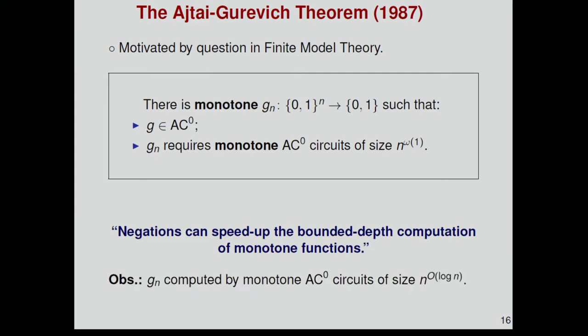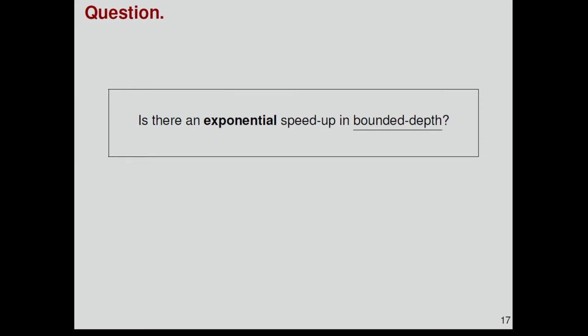If we inspect the proof, it turns out that this function G_n is computed by monotonic circuits of quasi-polynomial size. Their approach using this function cannot give you a stronger separation than quasi-polynomial. This brings us to a very natural question. Is there an exponential speed-up in bounded depth? If we use cancellations or negations, can we compute monotone functions much faster? The analogous question for arbitrary circuits was answered positively by Tardos in 88. In the case that there is no bounds on the depth of the circuits, we know that negations can give you an exponential speed-up.